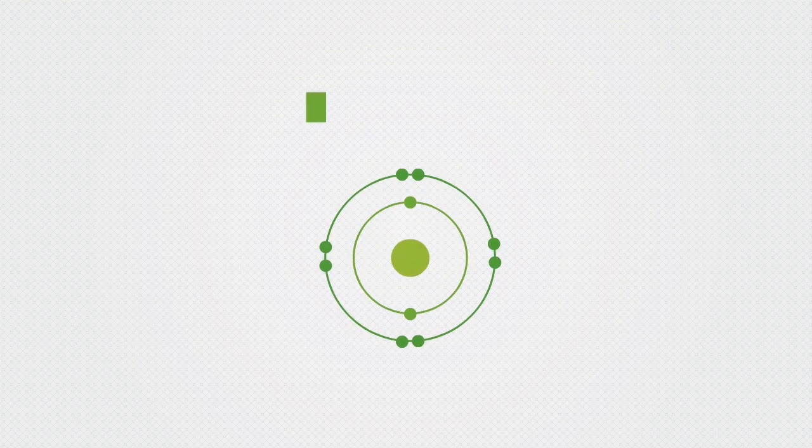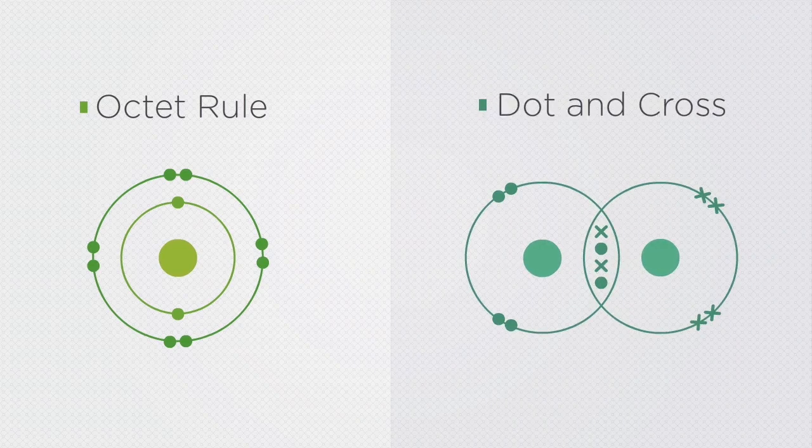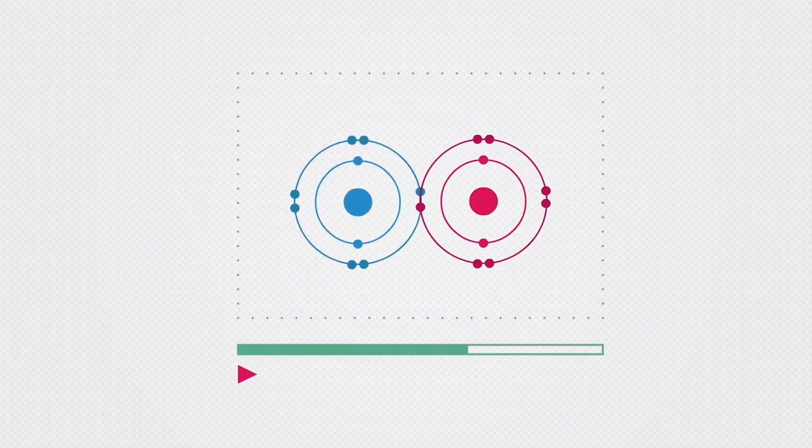In this video we are going to learn about the octet rule and how to construct dot and cross diagrams to show the covalent bonding in hydrogen, oxygen and nitrogen. As seen in the video how atoms bond.